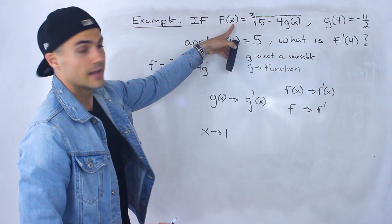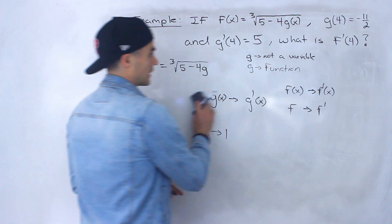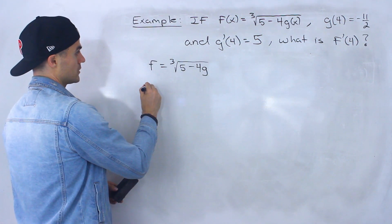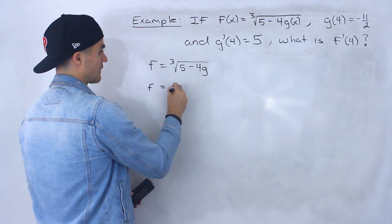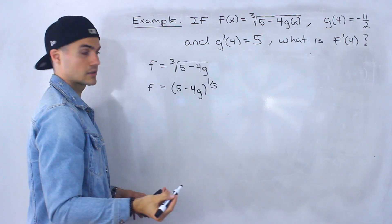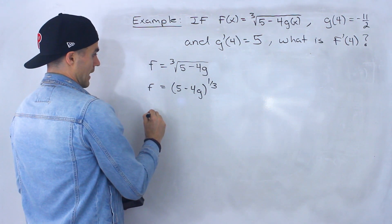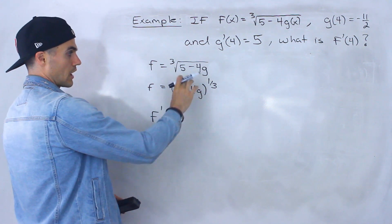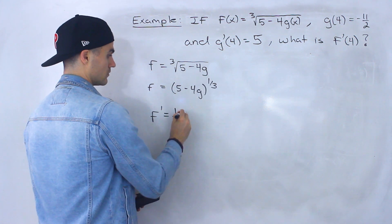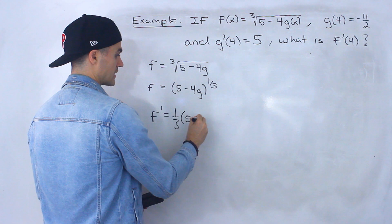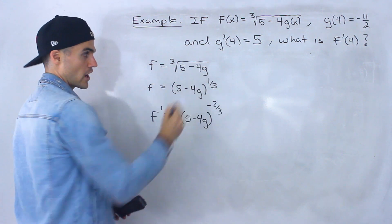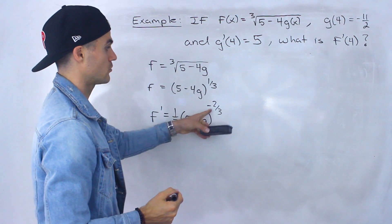x is the independent variable we're looking at. I'm going to show you how that comes about. First, I'm going to rewrite this function as 5 minus 4g to the power of 1 over 3. Then to find the derivative, I'm going to apply the chain rule. So I'll take the derivative of the outside function — bring that 1 over 3 down, the inside function stays the same: 5 minus 4g to the power of negative 2 over 3.